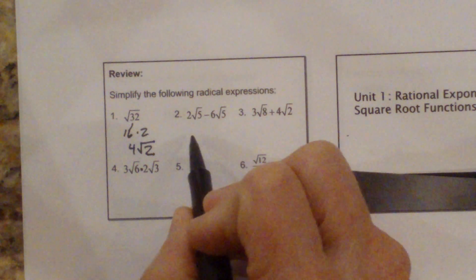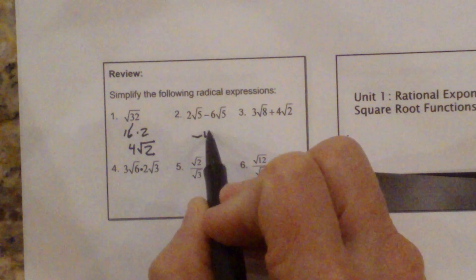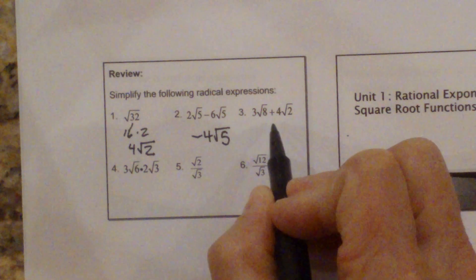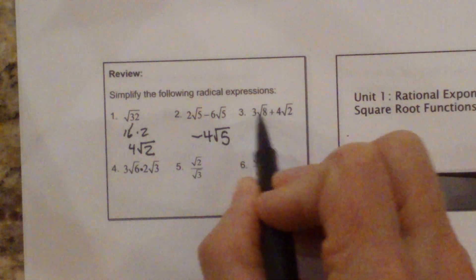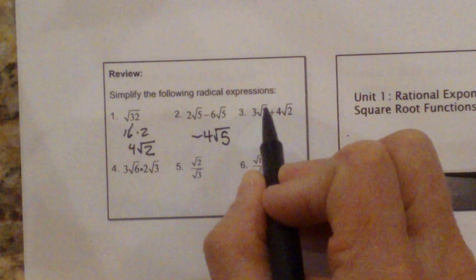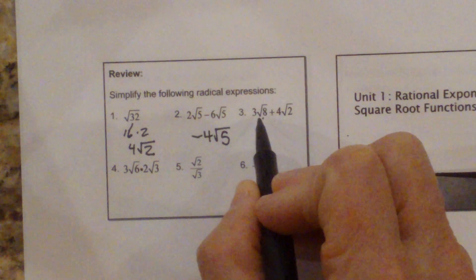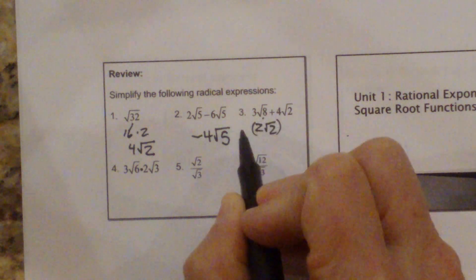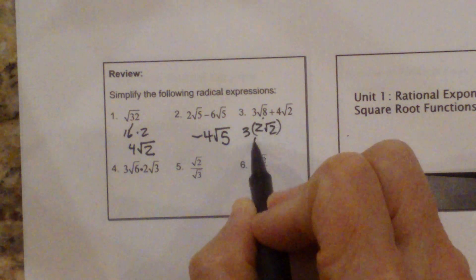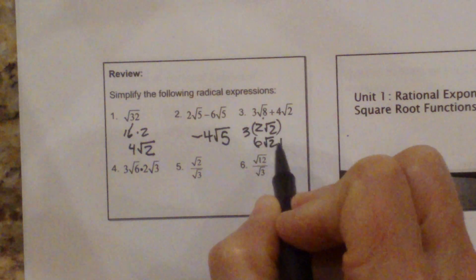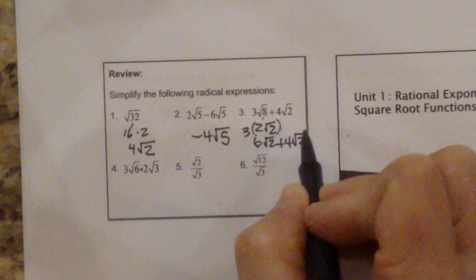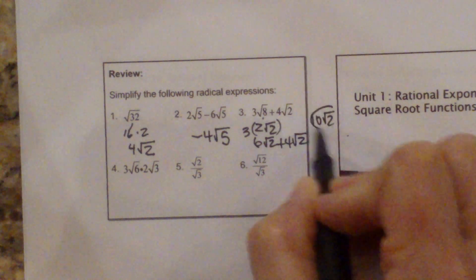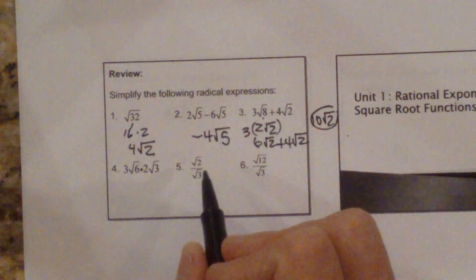You can combine these to a negative 4 radical 5. You can combine these once this one is simplified. This is going to be: the square root of 8 is 2 root 2. But then you're going to multiply that by 3, so it's 6 root 2 plus 4 root 2, which is 10 root 2. So that's that third one.